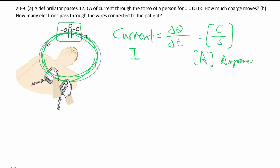We make use of this particular definition to find out how much charge moves. So flipping this around, we have that knowing that my current is 12 amps times a very short time, in this case for a defibrillator.